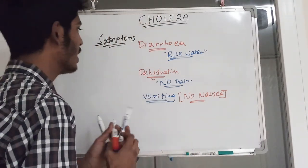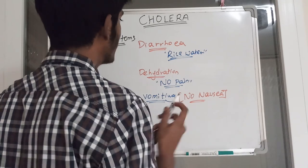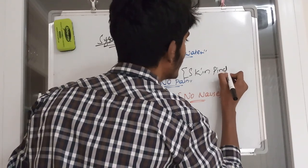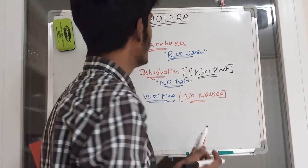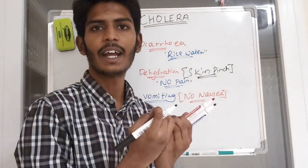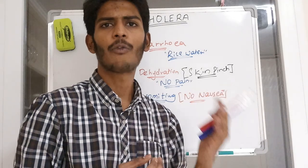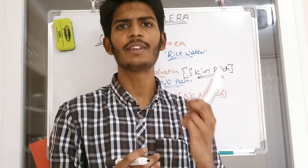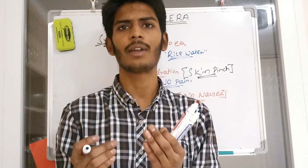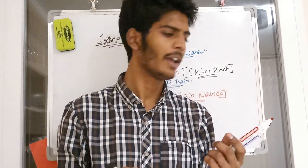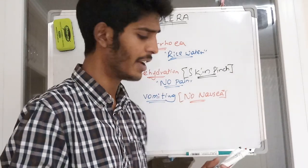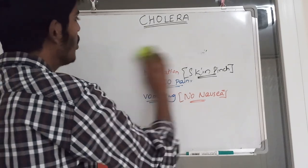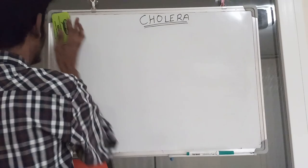To check for dehydration, we do a test called the skin pinch test. In this test, we assess the elasticity of the skin to determine the grade of dehydration. It is very important to find the degree of dehydration before starting therapy. If we miss the severity of dehydration, we can lose the patient — that is why assessing dehydration is critical in these patients.